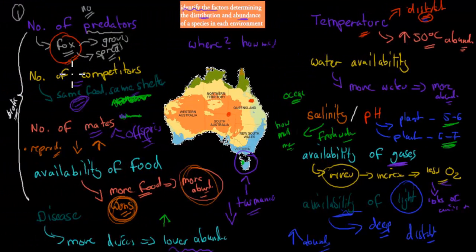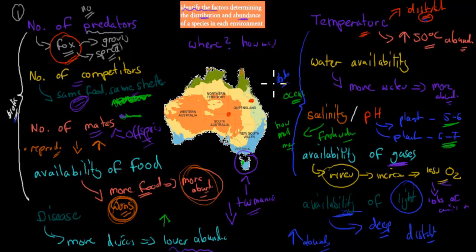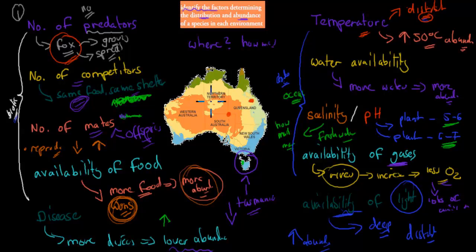So these were the factors. Number of predators, number of competitors, number of mates, availability of food, and disease — these were the biotic factors. Temperature, water availability, salinity, pH, availability of gases, and availability of light — these were the abiotic, non-living factors. Overall, they affect distribution — where we can find things — and abundance — how many. Whatever is found in an environment is best adapted to both its biotic and abiotic factors.